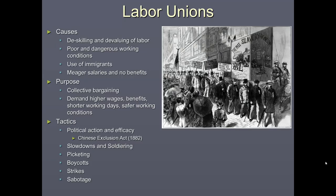Causes of labor unions included the desire to address poor and dangerous working conditions and to provide protection, especially for immigrants. Popular labor unions created during this time included the National Labor Union; the Knights of Labor, founded by Uriah Stevens and headed by Terence Powderly; the American Federation of Labor, created by Samuel Gompers; and the Congress of Industrial Organizations (CIO). The AFL and CIO exist today, fused into one labor union. Labor unions were often seen as terrorists and associated with socialism — giving workers power over business leaders. Business owners used tactics like lockouts and hiring scabs to fight unions.